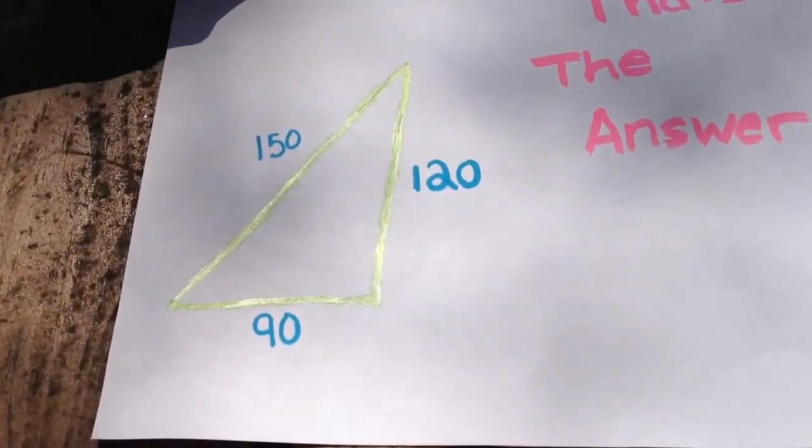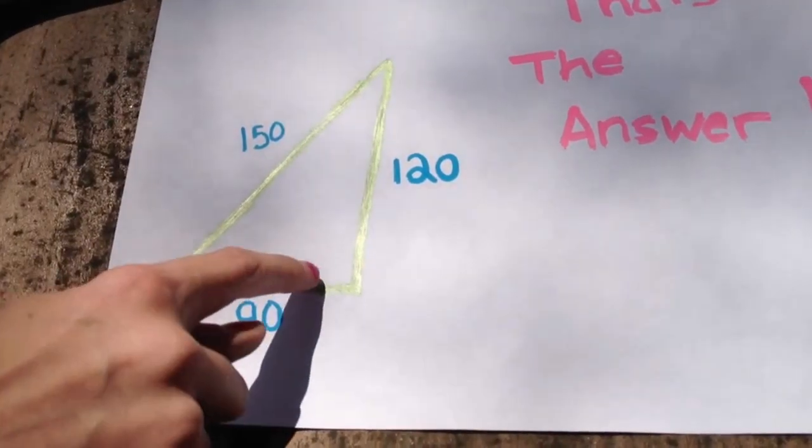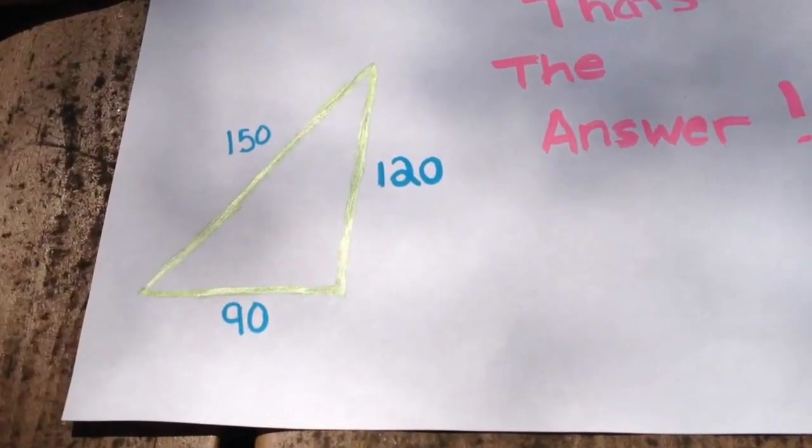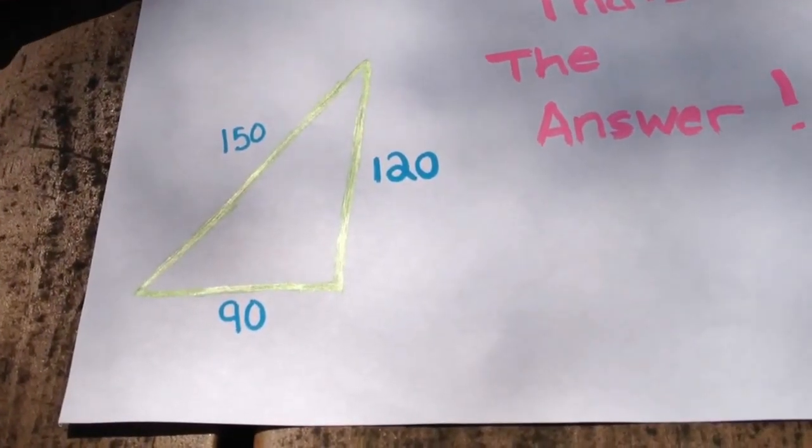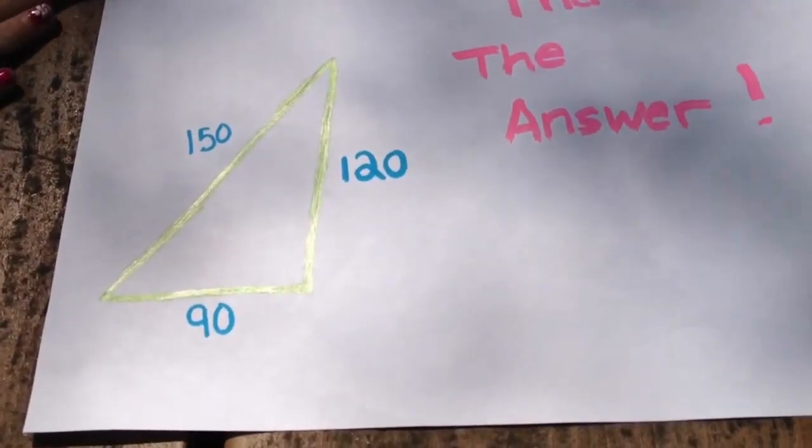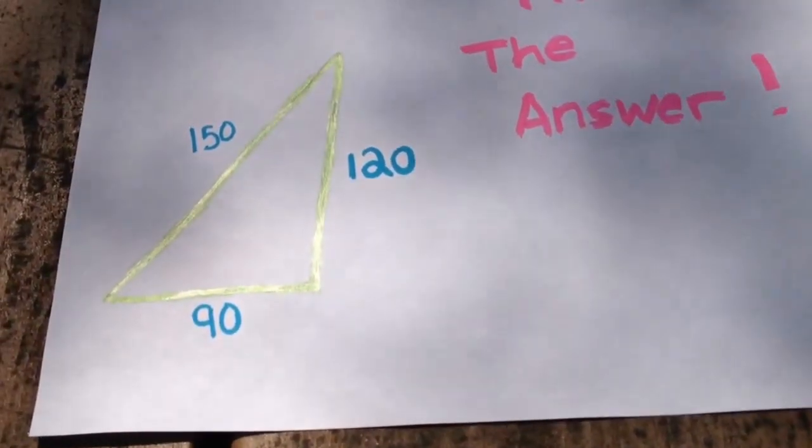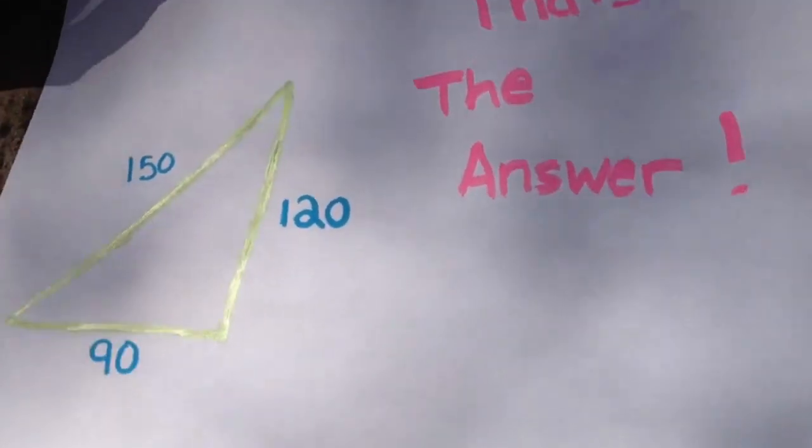And then here's our triangle. Emma, can you point to where the right angle would be in this triangle? And how do we know that that is the right angle in this particular triangle, Amari? It points to the hypotenuse. It does point to the hypotenuse. And Nikki, how do we know that 150 is the hypotenuse in this problem? Because it's longer than the other two sides. And the Pythagorean Theorem worked. Excellent work. Yay!